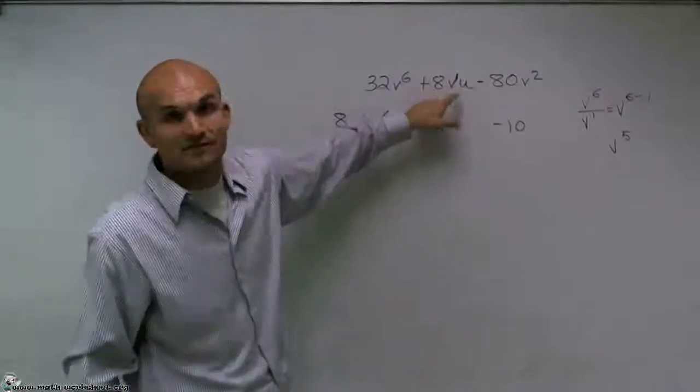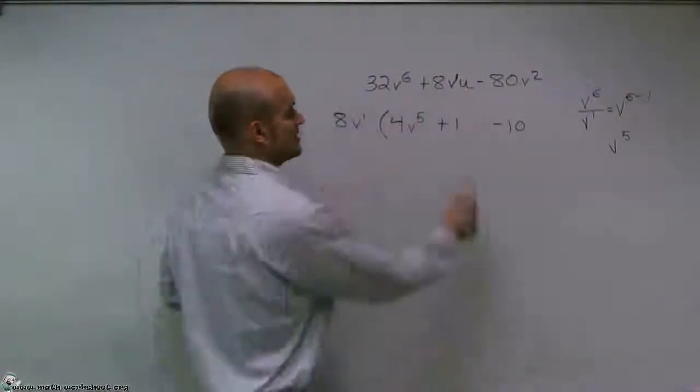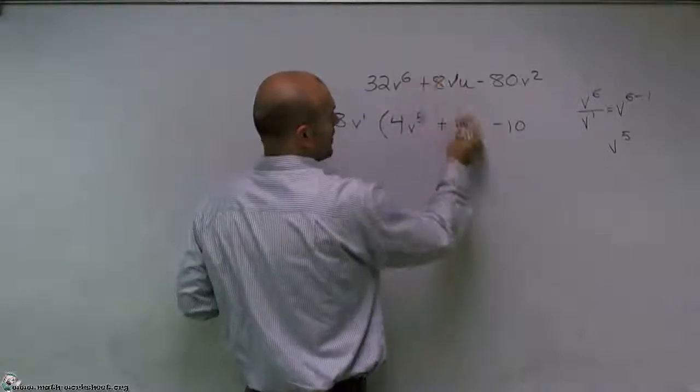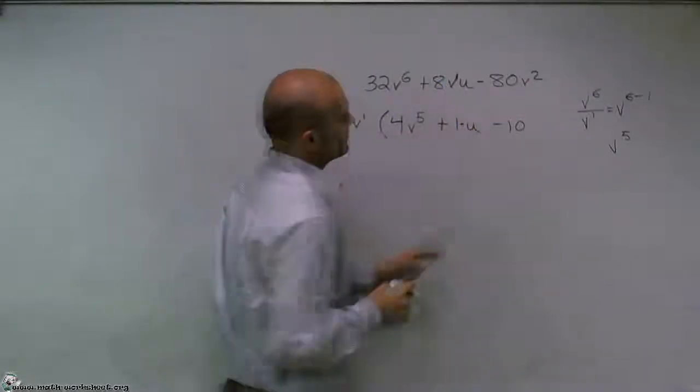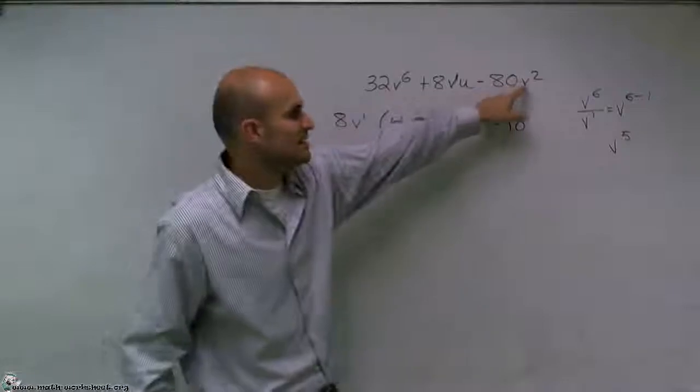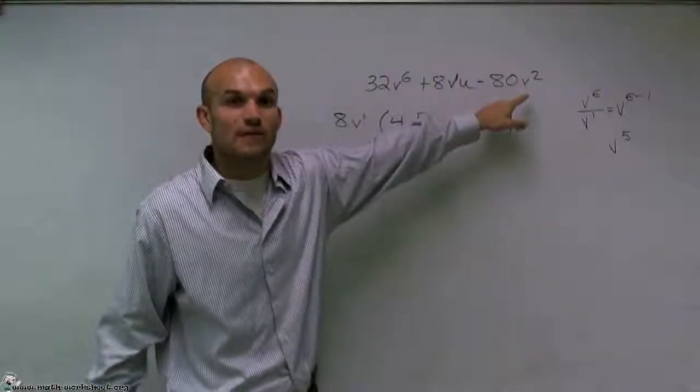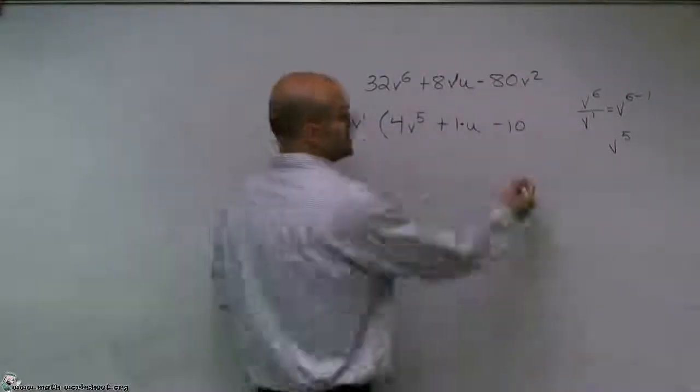If I factor out my V to the first, that's the only V I have here. So I'm just going to be left with 1 times U. And then here, if I factor out a V to the first from a V squared, I'm going to be left with another V to the first power.